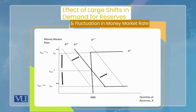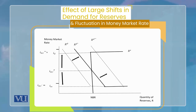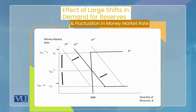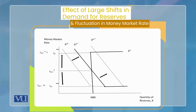اس چیز کو ایک diagram سے سمجھتے ہیں۔ ہمارے پاس RS ہے جو reserves کا supply curve ہے — non-borrowed reserves تک vertical ہے اور discount rate پہ جا کے horizontal ہو جاتا ہے۔ دوسری طرف RD ہے demand for reserves کا curve جو IOR پہ جا کے horizontal ہو جاتا ہے۔ ان دونوں کا equilibrium ہمیں IMRt دیتا ہے — یعنی یہ money market کا equilibrium rate ہے۔ چونکہ یہ floor اور ceiling کے درمیان میں ہے، یہ target کے equal بھی ہے۔ اب اگر کسی وجہ سے demand curve right side پہ بہت بڑی magnitude کے ساتھ shift ہو جائے۔